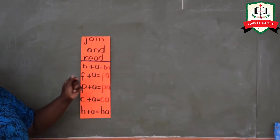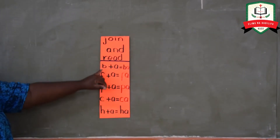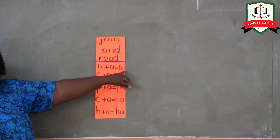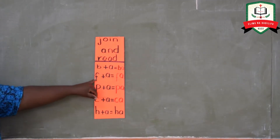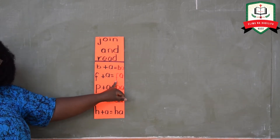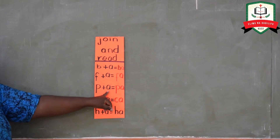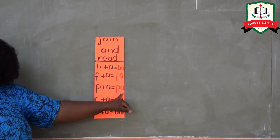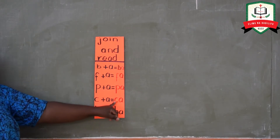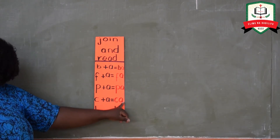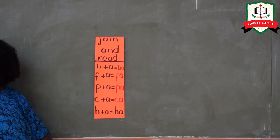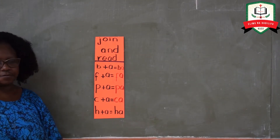Okay, let's read together from the top. Let's go. Bu and a, together we get ba. Fu and a, we get fa. Pu and a, we get pa. Ku and a, it says ka. Ha and a, it says ha. Very good.